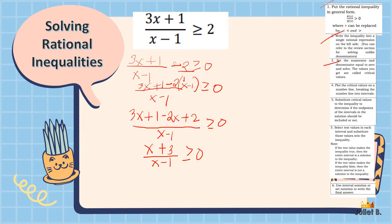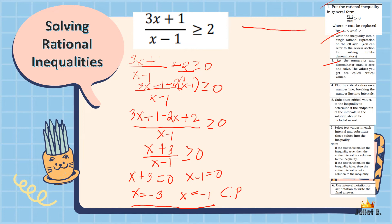Step 3: set the numerator and denominator equal to 0 and solve. Setting x plus 3 equals 0 gives x equals negative 3. Setting x minus 1 equals 0 gives x equals 1. These are the two critical points. On the number line, negative 3 is to the left and positive 1 is to the right of 0.